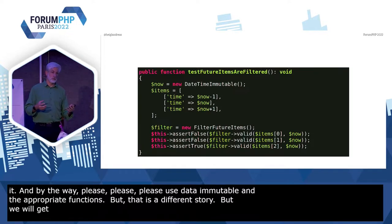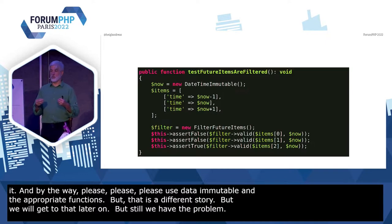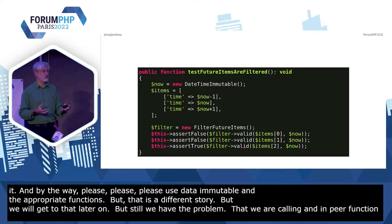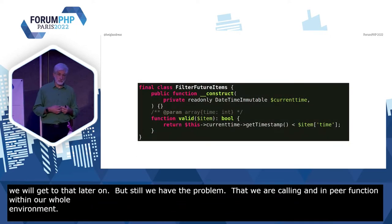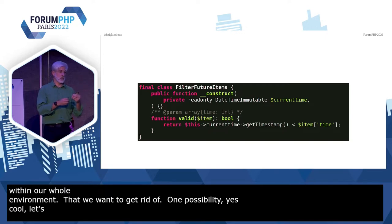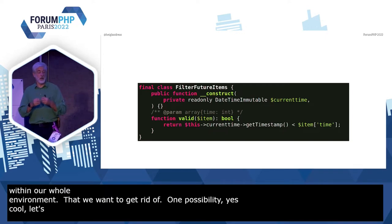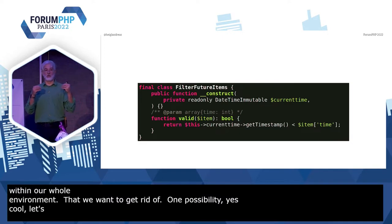But still we have the problem that we are calling an impure function within our whole environment, and we want to get rid of that. So what will be a possibility? Let's inject this DateTimeImmutable that we are using now, instead of `time()`. Let's inject that into our filter. So instead of instantiating that in the `validate` function, we inject it into it.